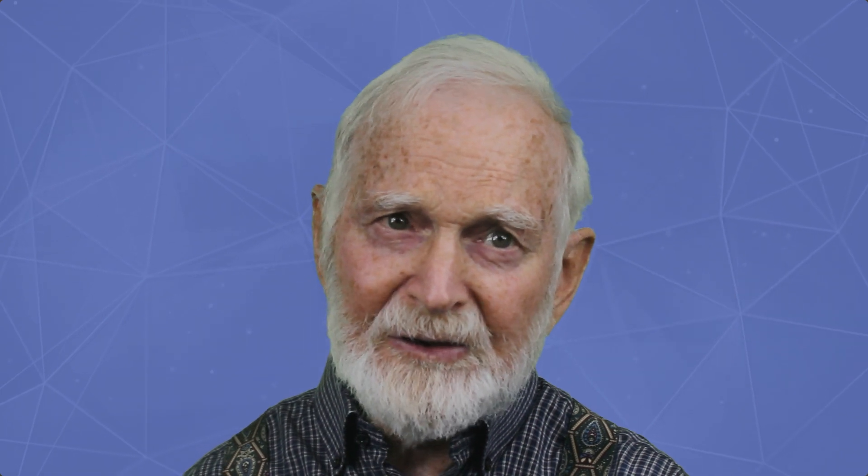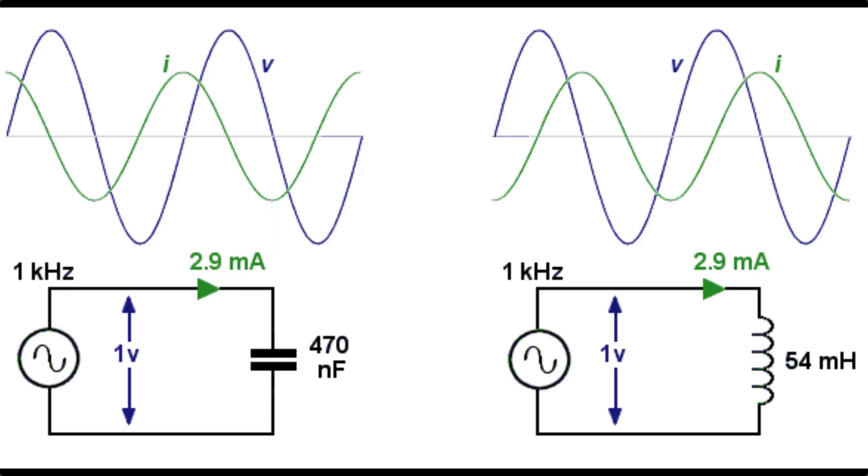In electrical circuits, conductors and resistors have voltage and current synchronized. As voltage increases, current increases. They are in phase with each other. But other components are not like that. Capacitors and inductors have voltages and current out of phase.